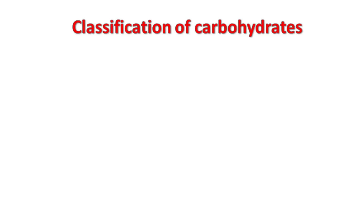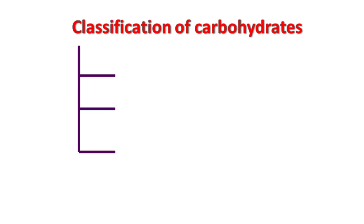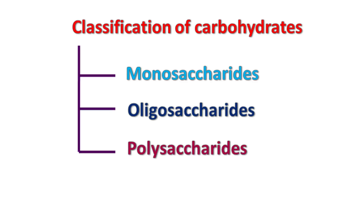Carbohydrates are often termed as saccharides, which means sugar. Carbohydrates are mainly classified into three major groups known as monosaccharides, oligosaccharides, and polysaccharides.